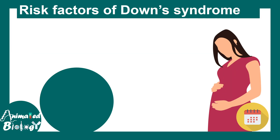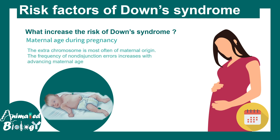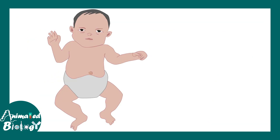Risk factors of Down syndrome include maternal pregnancy age. It has been seen that as the age at pregnancy increases, the frequency of non-disjunction errors also increases, which raises the risk of developing Down syndrome. So maternal age is one of the important risk factors.